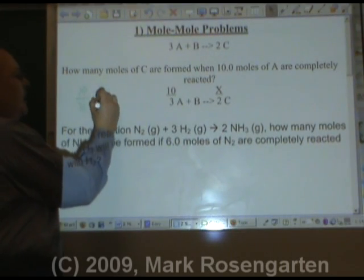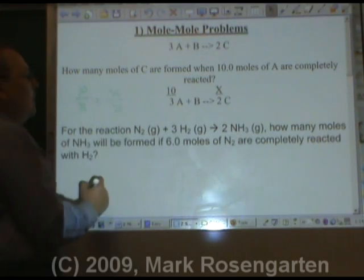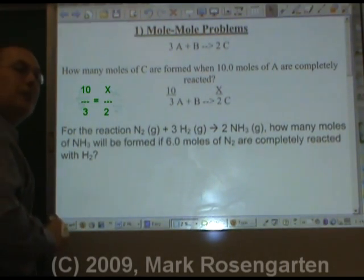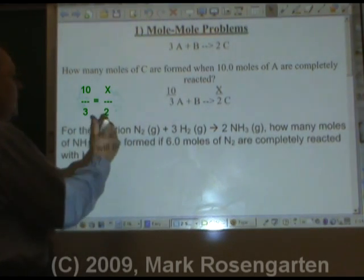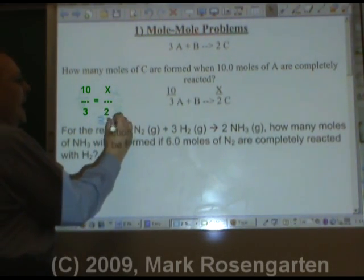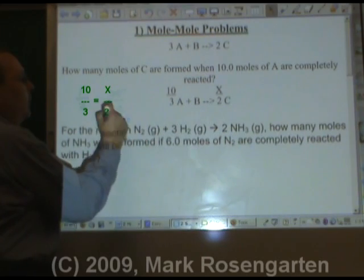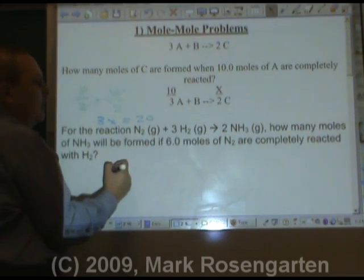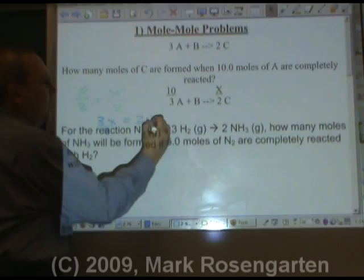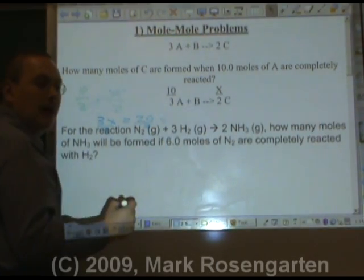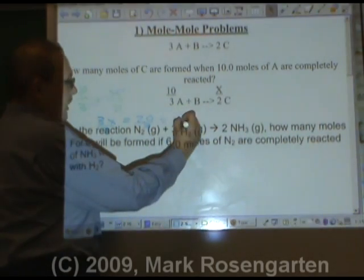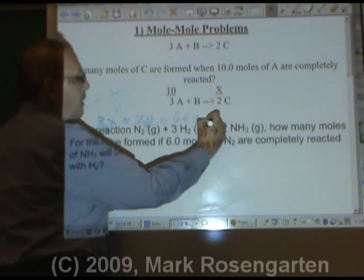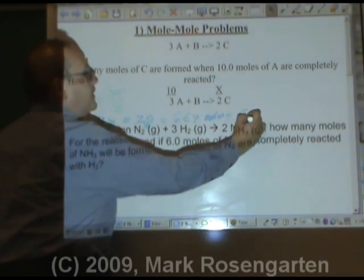Ten is to three as X is to two. So you just solve this algebra problem. Three X equals ten times two is twenty. So now we divide both sides by three. Twenty divided by three equals 6.67 moles of C.